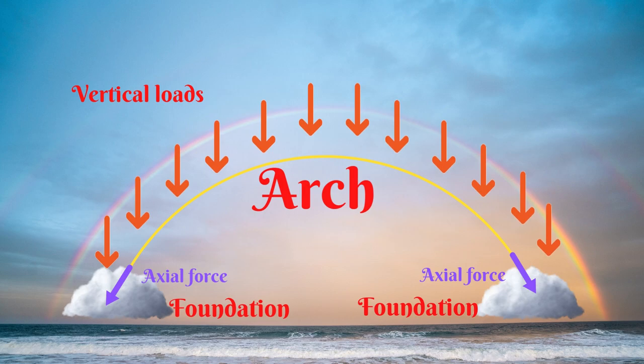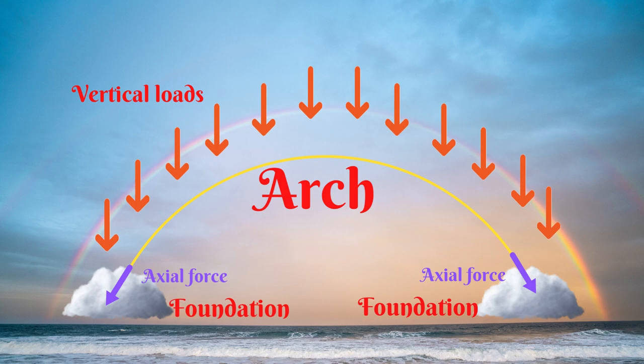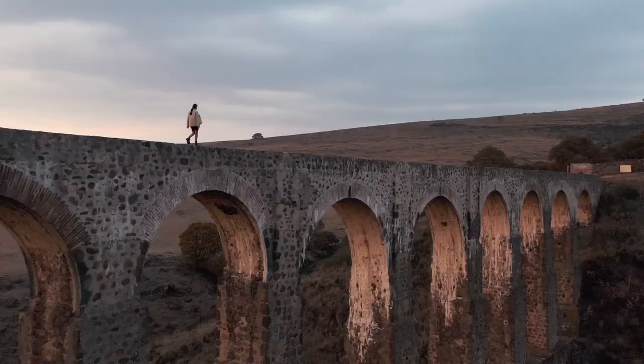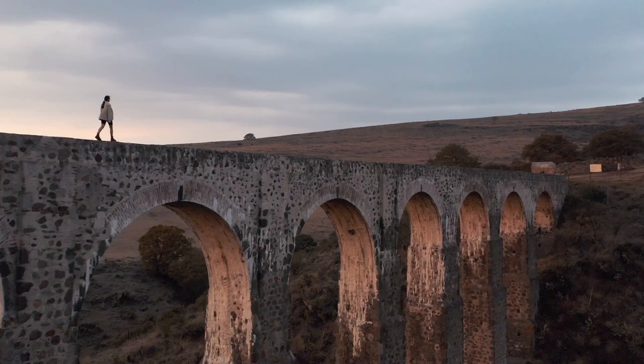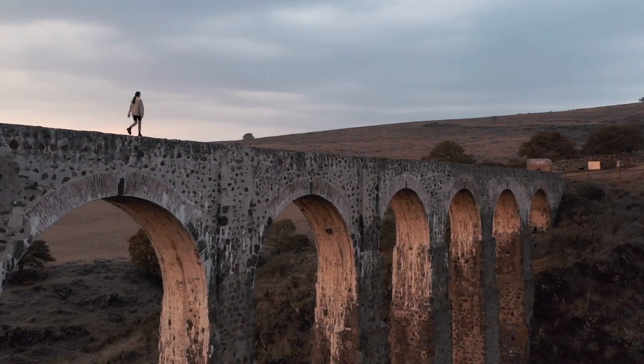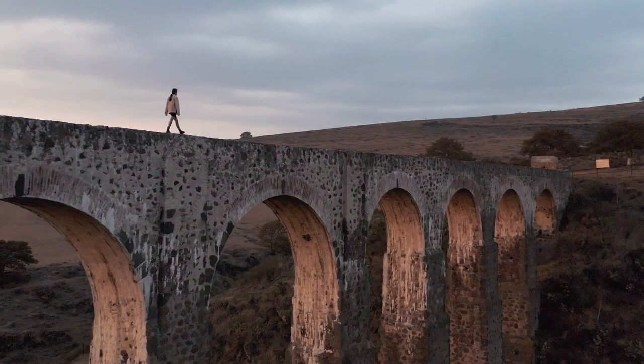An arch is a curved structural form. It supports a vertical load primarily by axial compression, transferring them around the profile of the arch to foundations on either side. The masonry arches have been well developed and applied in structures by the Romans, even the Etruscans, who are credited with its invention. The arches are self-supporting, stabilized by the force of gravity acting on their weight to hold them in compression. This makes them very stable and efficient, capable of larger spans and supporting greater loads than horizontal beams.